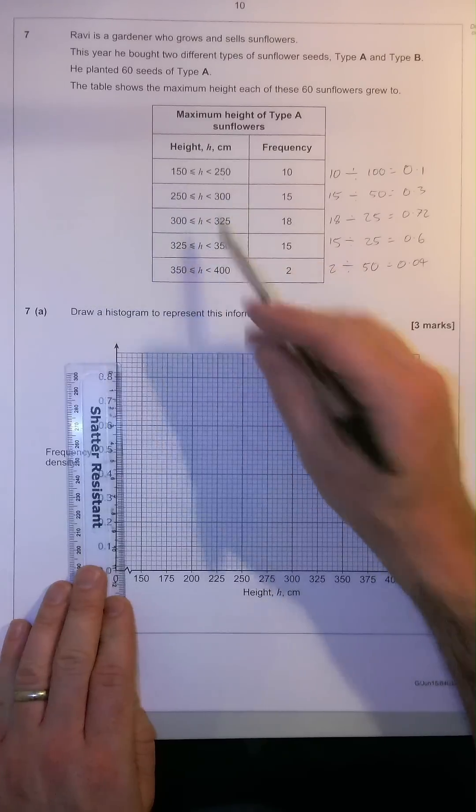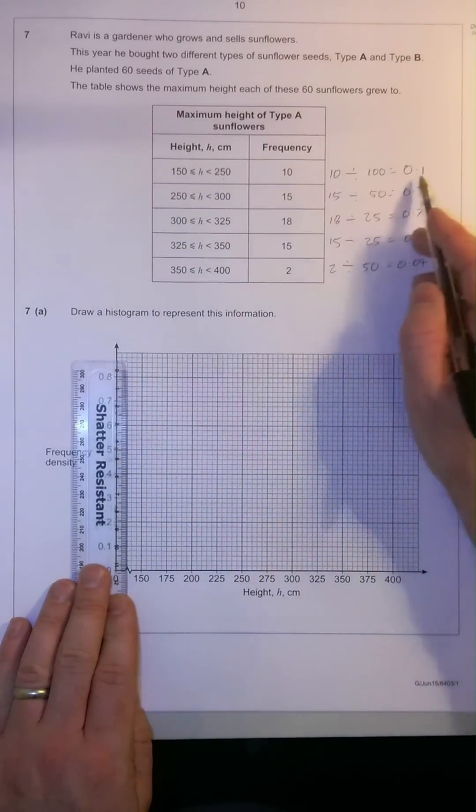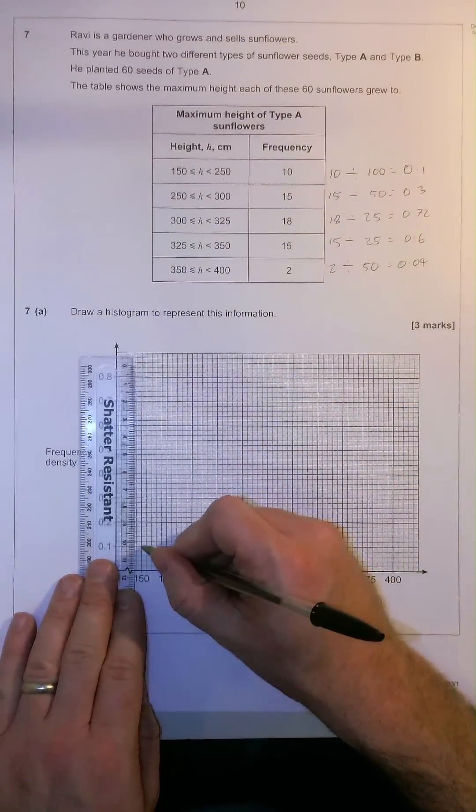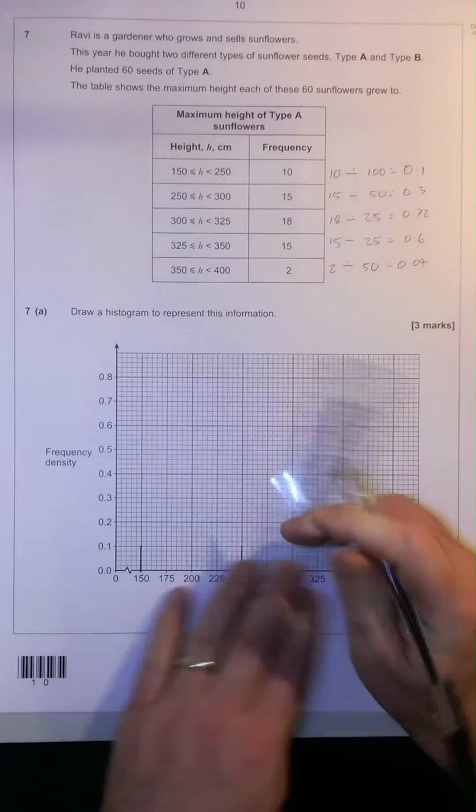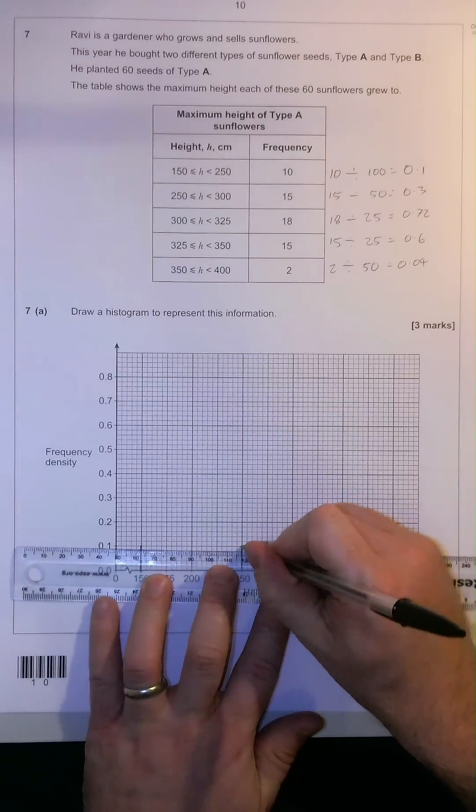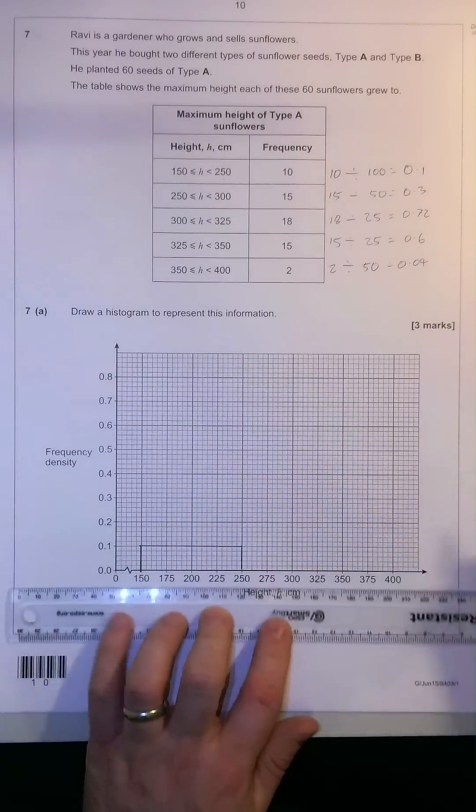So, firstly, between 150 and 250, the column is going to be 0.1 high. So let's do our two lines and join together. There's our first column.